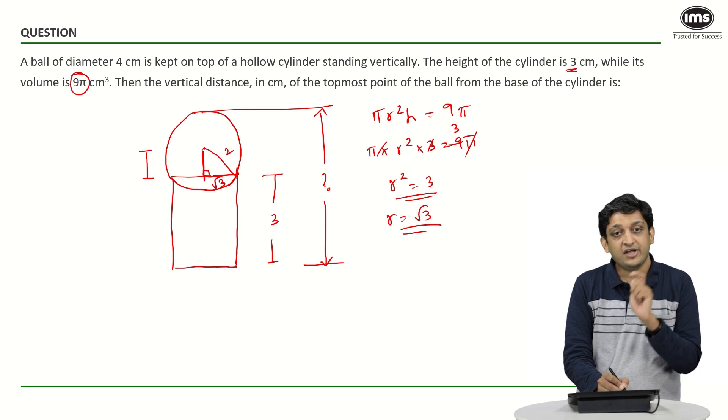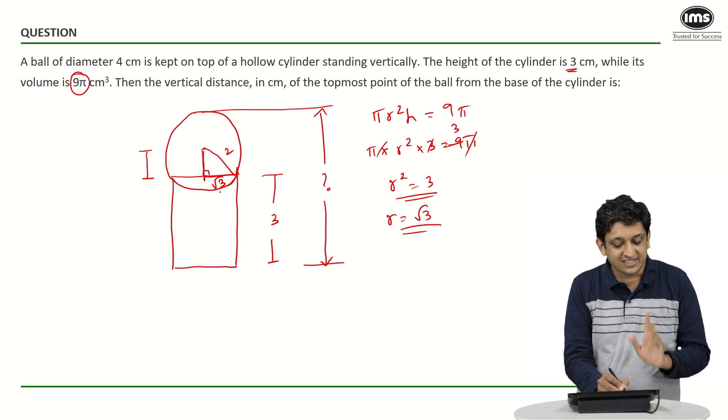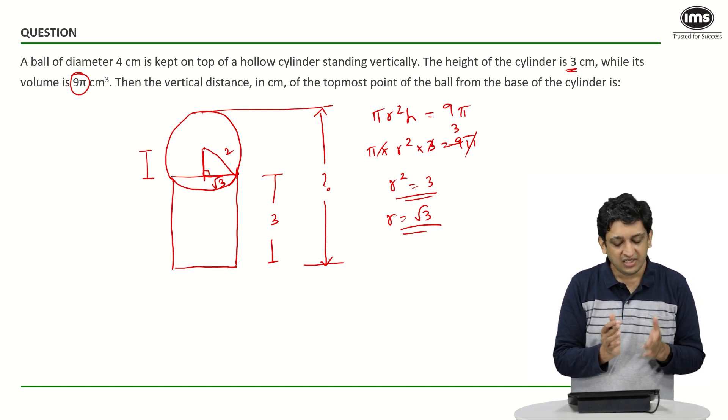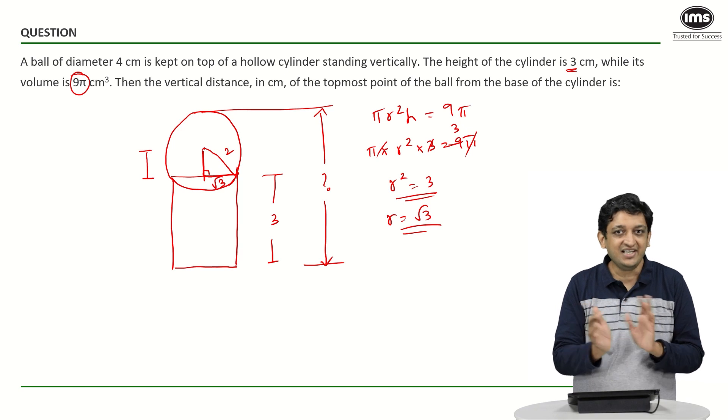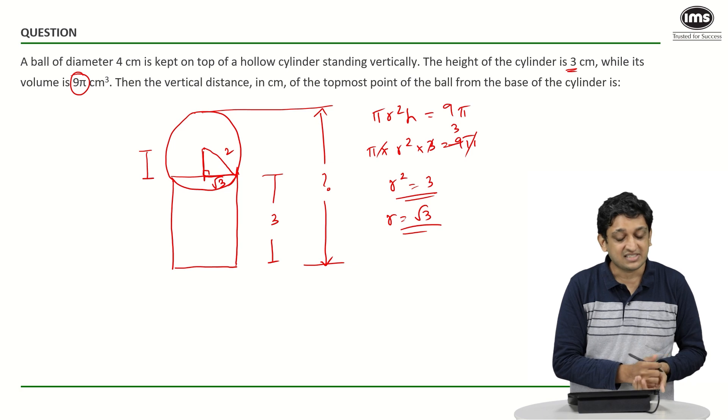Because we have dropped a perpendicular we have now formed a right angled triangle with hypotenuse to one of the sides as root. So what can we say about the third side? It is fairly straight forward. You can either use 30, 60, 90 if you are good at these things or you can simply use Pythagoras. Let us say we are using Pythagoras in this case.